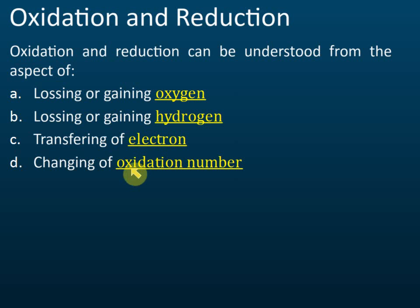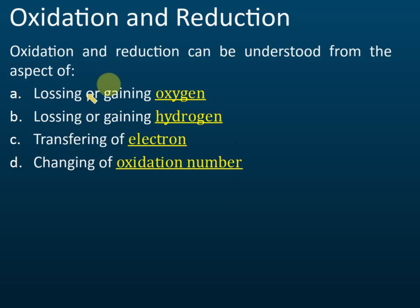Method C — electron transfer — is a little bit harder for most students to apply. Therefore, I suggest identifying oxidation and reduction using the fourth method, the change in oxidation number. But you still need to learn all four methods. We have four methods to identify whether a reaction involves oxidation or reduction.